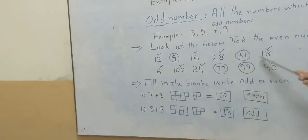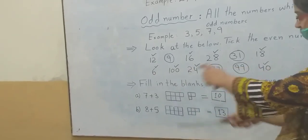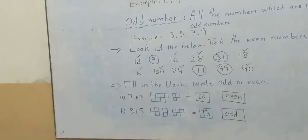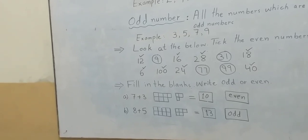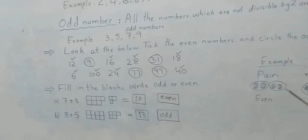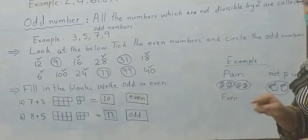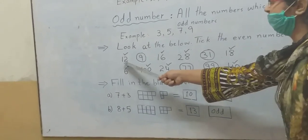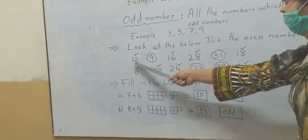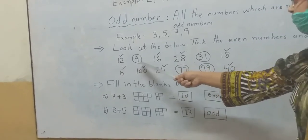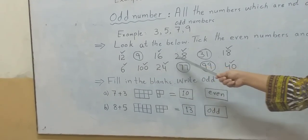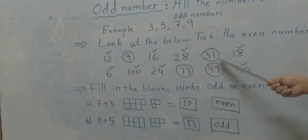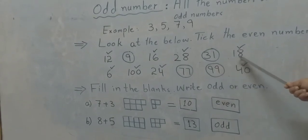In this sequence of numbers, you have to tick the even numbers and circle the odd numbers. Twelve — even number. Nine — odd number. Sixteen — even. Twenty-eight — even. Thirty-one — odd. Eighty — even number.